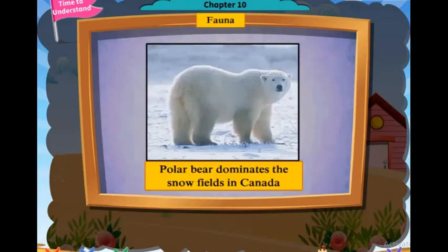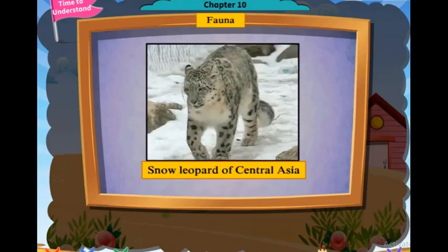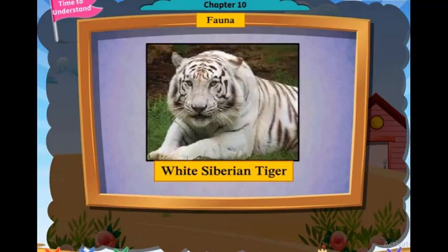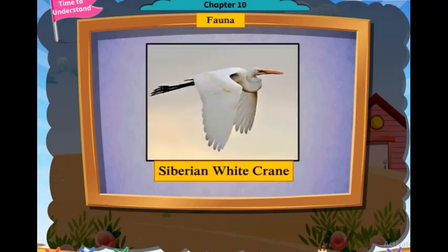The polar bear dominates the snow fields in Canada. The snow leopard lives in the mountains of Central Asia. Other animals include the white Siberian tiger and the Siberian white crane, or snow crane.